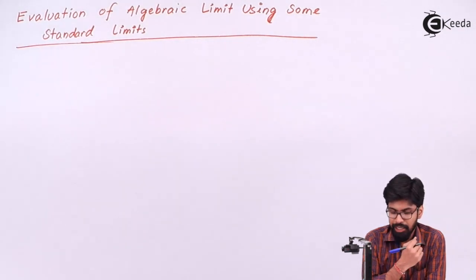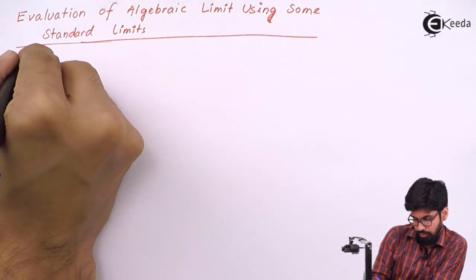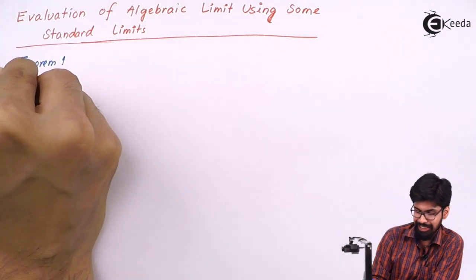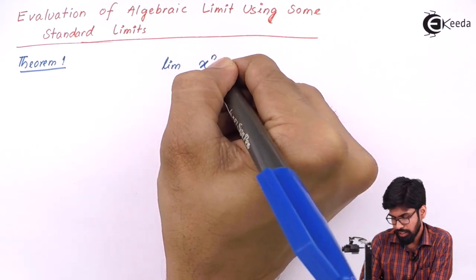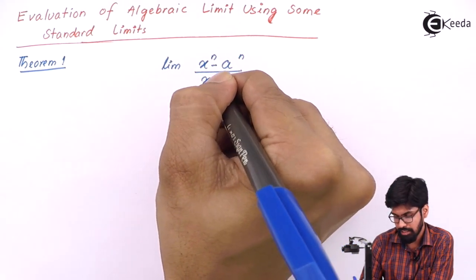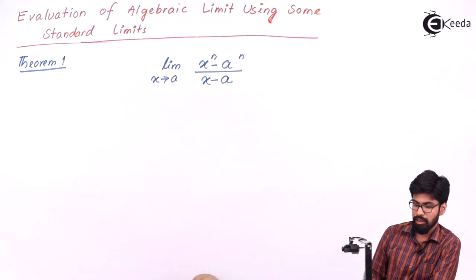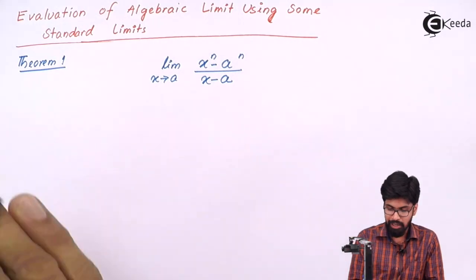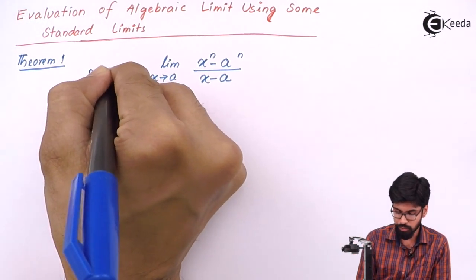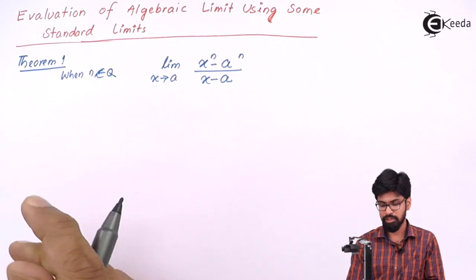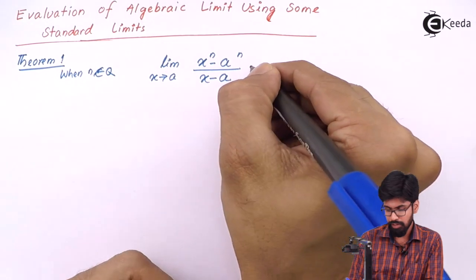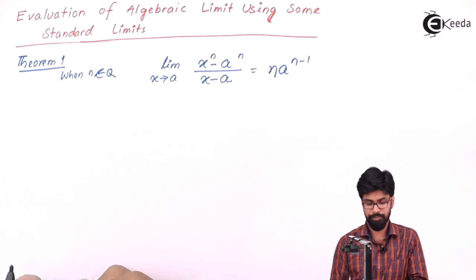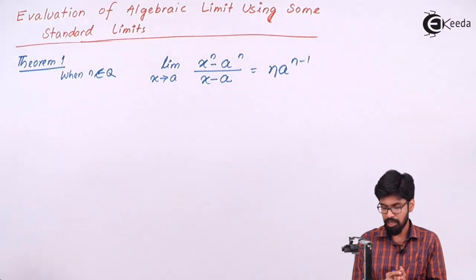Let us study evaluation of algebraic limits using some standard limits. In this we will come to Theorem 1, which says: the limit of x raise to n minus a raise to n upon x minus a, when x approaches a, where n belongs to Q. The theorem says this is equal to n times a raise to n minus 1.